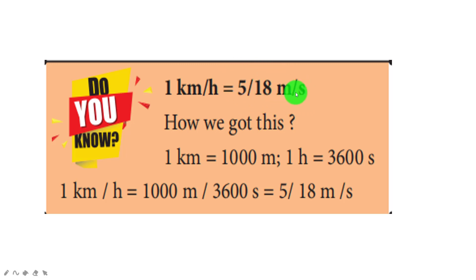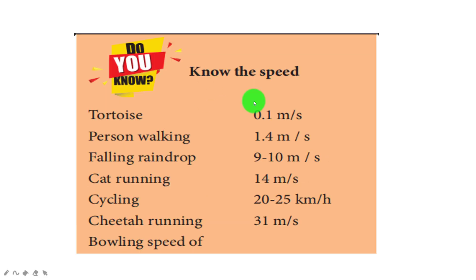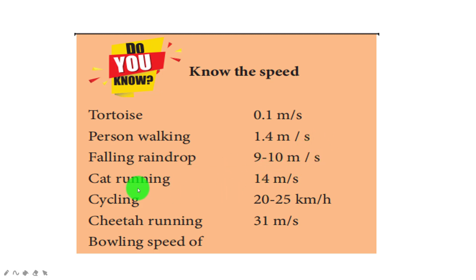You will get the answer in meter per second. Here is a table showing different units for measuring speed: tortoise — 0.1 m/s; person walking — 1.4 m/s; falling raindrop — 9 to 10 m/s; cycling — 20 to 25 km/hr. We can use units in both km/hr and m/s.